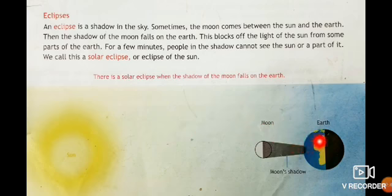This blocks off the light of the sun from some parts of the earth. For a few minutes, people in the shadow cannot see the sun or part of it. We call this solar eclipse or eclipse of the sun.